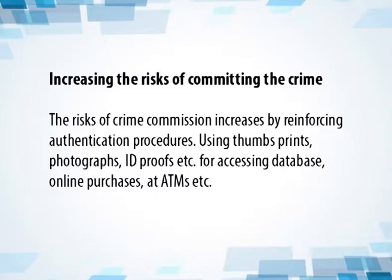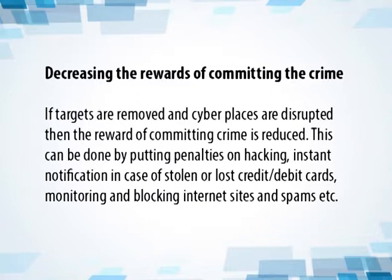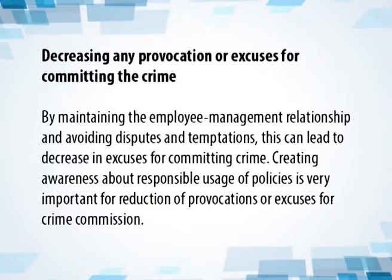Next is increasing the risk of committing the crime. The risks of crime commission increase by reinforcing authentication procedures using thumbprints, photographs, ID proofs, etc., for accessing databases, online purchases, ATMs, etc. Third is decreasing the rewards of committing the crime — if targets are removed and cyberplaces are disrupted, then the reward of committing crime is reduced. This can be done by putting penalties on hacking, instant notification in case of stolen or lost credit or debit cards, monitoring or blocking internet sites and spams, etc. Fourth is decreasing any provocation or excuses for committing the crime. By maintaining the employee-management relationship and avoiding disputes and temptations, this can lead to a decrease in excuses for committing crime.